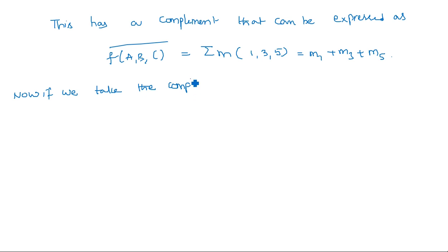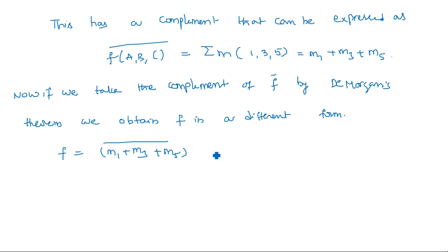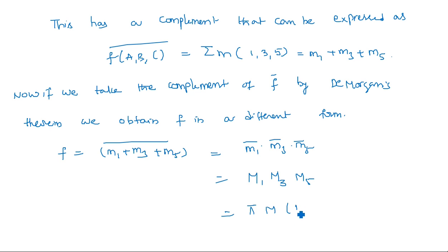Now if we take the complement of f̄ — that is, apply complement again — by De Morgan's theorem we obtain f in a different form, which is the max term form. So f = (m1 + m3 + m5) complemented = m̄1 · m̄3 · m̄5. Now m̄1 is capital M1, m̄3 is M3, m̄5 is M5, giving us f = ΠM(1,3,5).